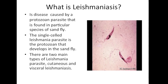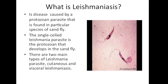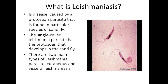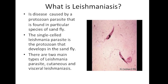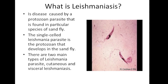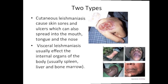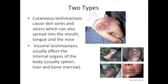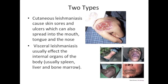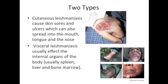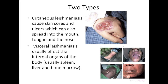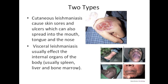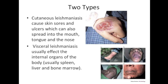There are two main types of Leishmaniasis: cutaneous and visceral Leishmaniasis. Cutaneous Leishmaniasis causes skin sores and ulcers which can also spread into the mouth, tongue and nose. Visceral Leishmaniasis usually affects the internal organs of the body, which are usually the spleen, liver and bone marrow.